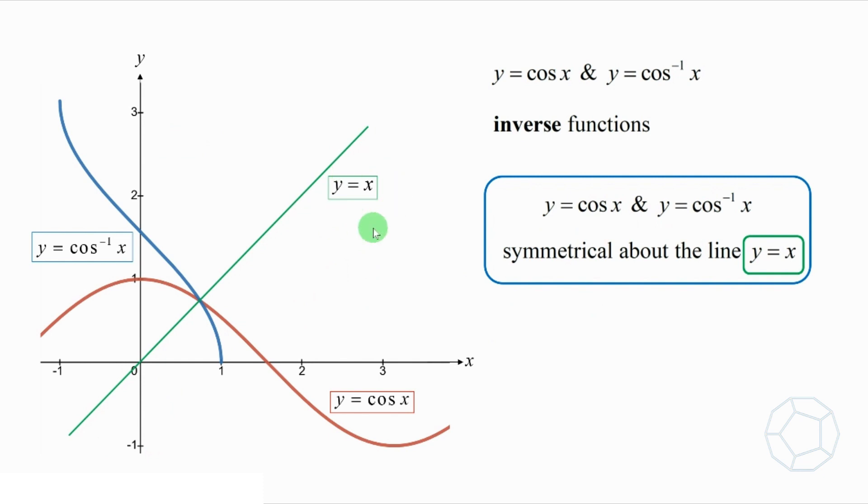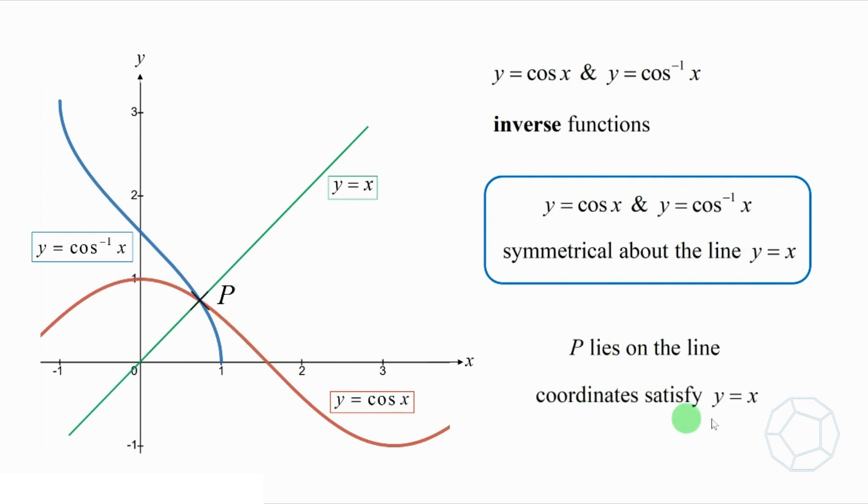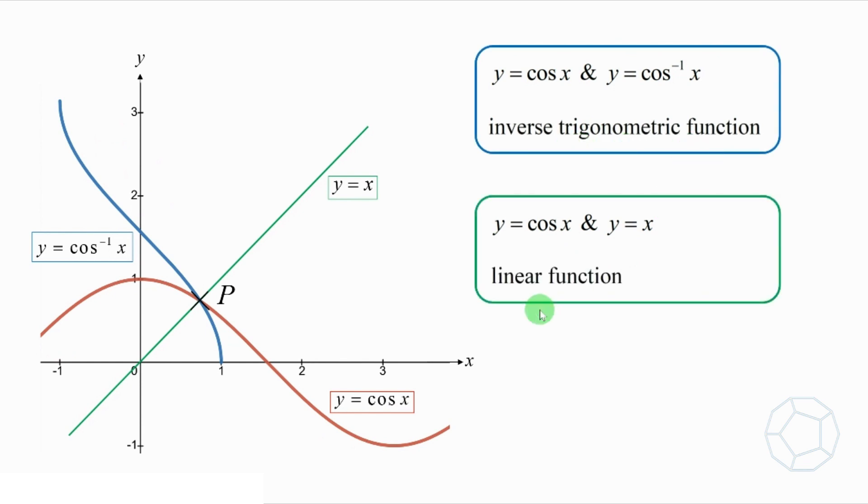Moreover, we have something nice here. The point P lies on this green line. So, the coordinates also satisfy y equals to x. Instead of looking at the blue and the red curves, we shall focus on y equals to cosine x and y equals to x only. The inverse trigonometric function is replaced by a linear function. It makes life much easier.